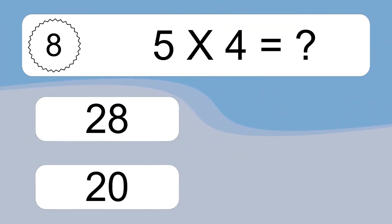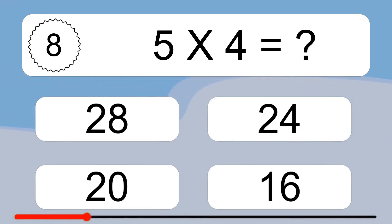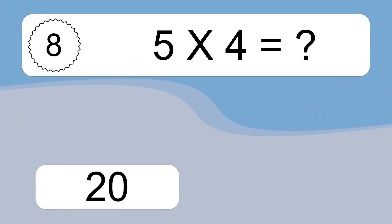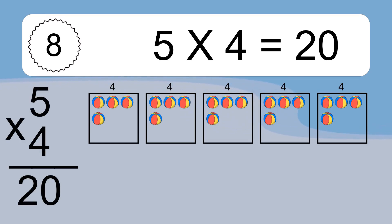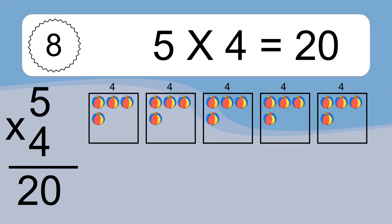Five times four equals what? Five times four equals 20. We have five boxes, and each box has four colorful balls inside. If you count all the balls in all the boxes together, you will have five times four balls. This equals 20 balls.